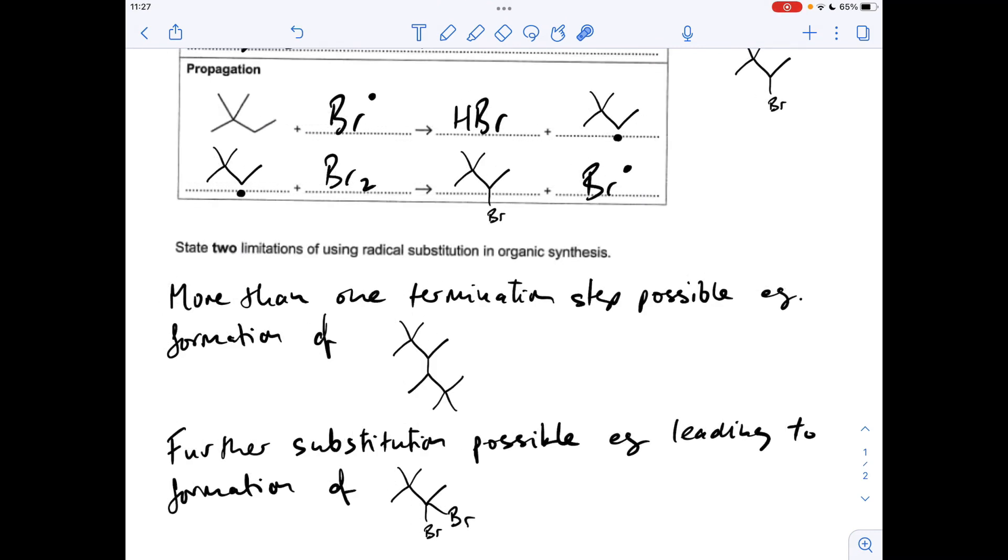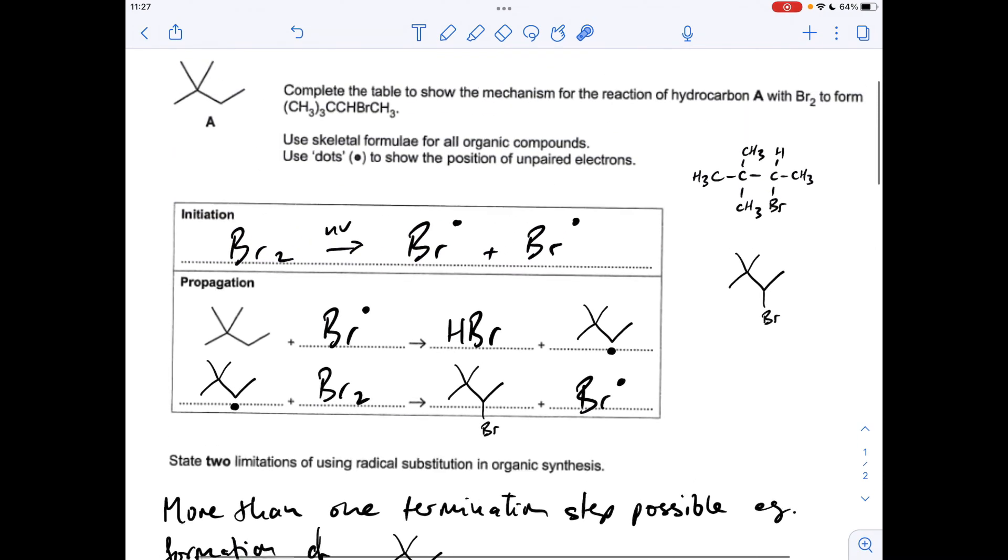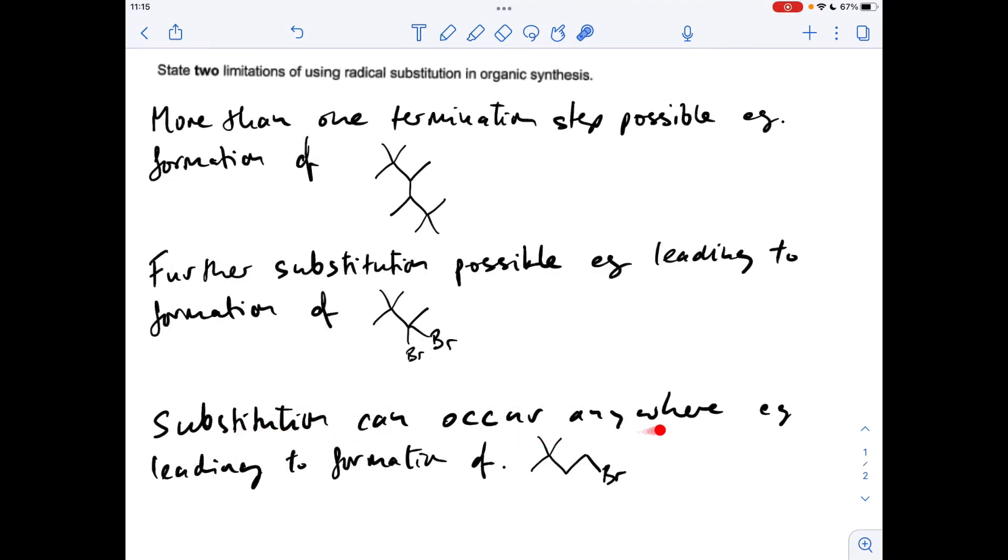Now I've already answered the question because I've said two limitations, but you might have gone for this one so I'll talk about it now. It's linked to this first propagation step. So remember we said that to form the desired product, substitution happened at this carbon. Well, this bromine radical can take hydrogen from there, could take hydrogen from here or here or here. So basically you can say that substitution can occur anywhere on the carbon chain. So that's how you could say substitution can occur anywhere, for example, leading to the formation of—and I've just used the second carbon instead.